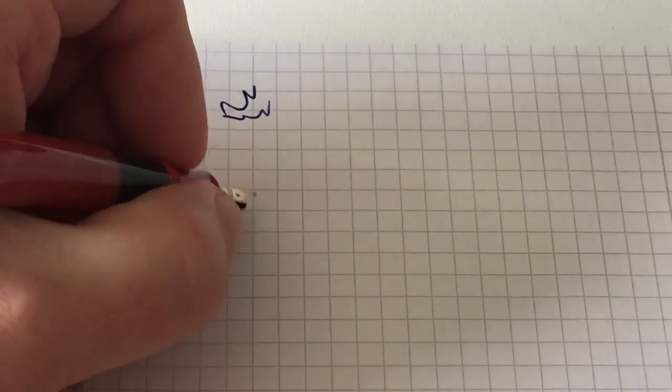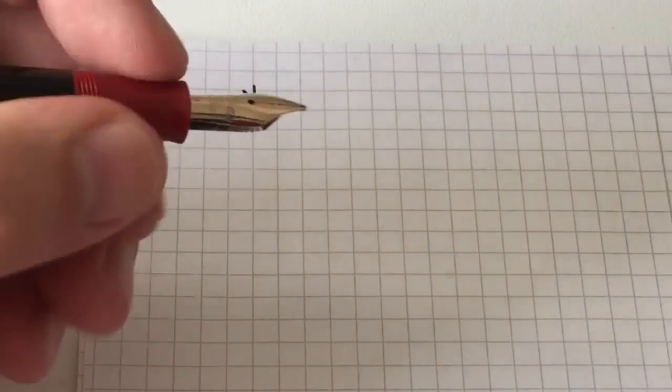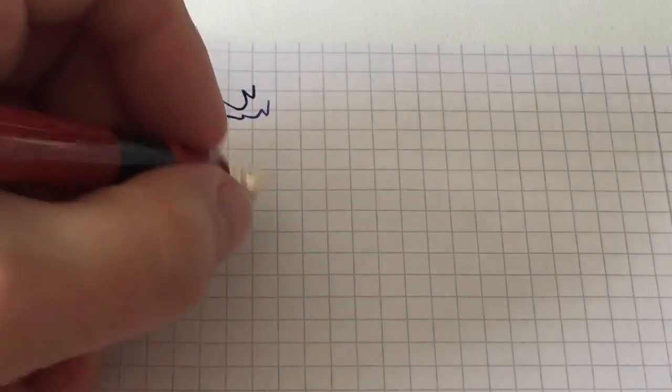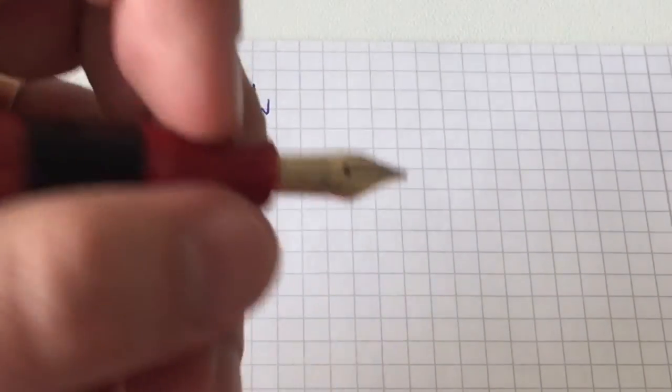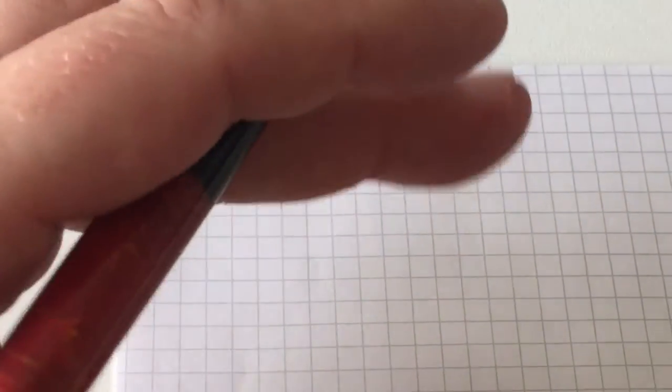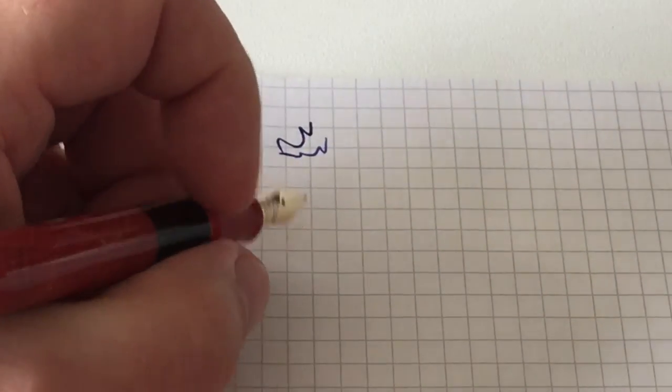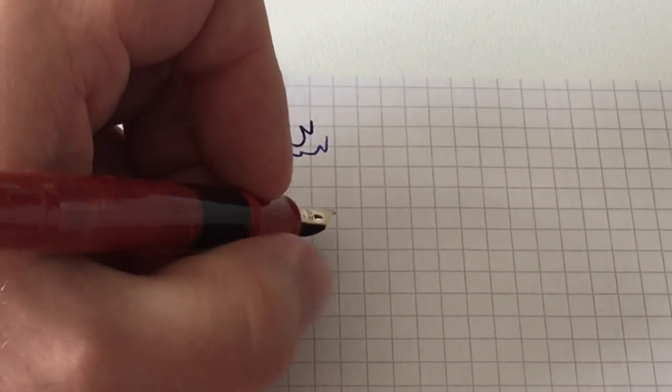Very nice smooth gold nib gives you that slight amount of feedback that just lets you know that you're writing, but very, very smooth—rather glassy, buttery smooth writing experience than a feedbacky writing experience.